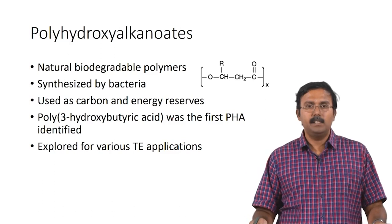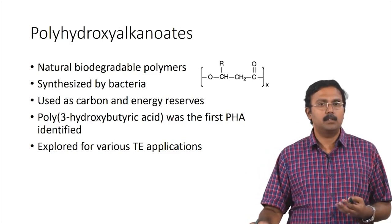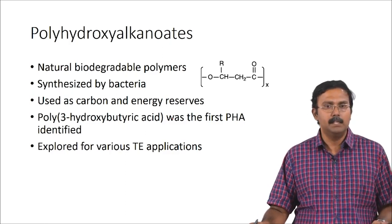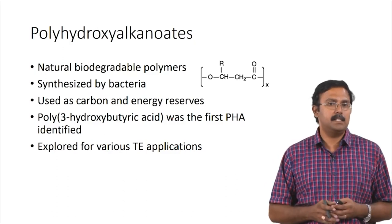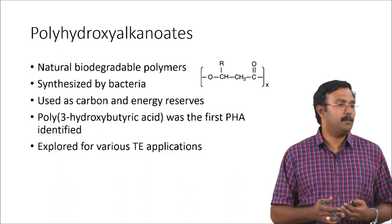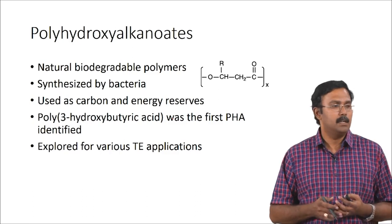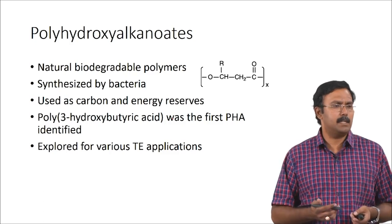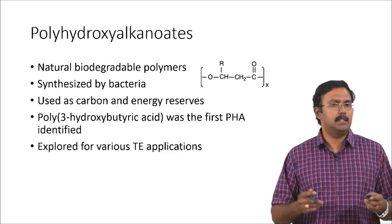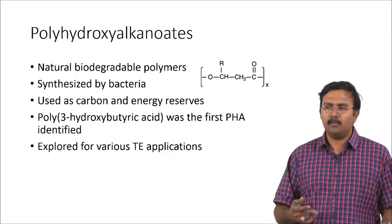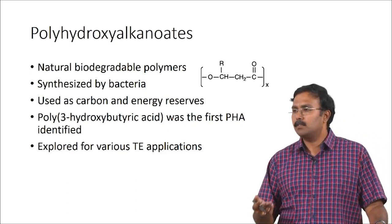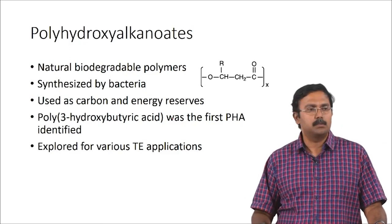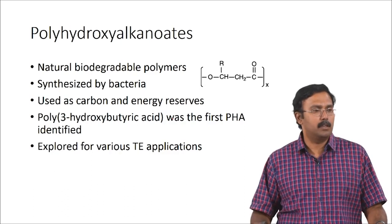The other last class of materials is the polyhydroxyalkanoates — natural biodegradable polymers which are synthesized by bacteria, used as carbon and energy reserves. The first PHA to be identified was polyhydroxybutyrate, also called PHB. These have been explored for various tissue engineering applications. Right now a lot of work is being done on fermentation processes for producing PHBs and other types of PHAs.